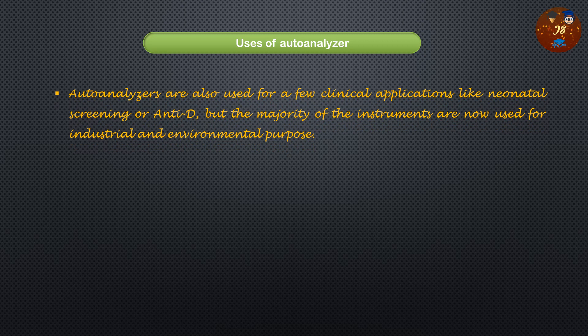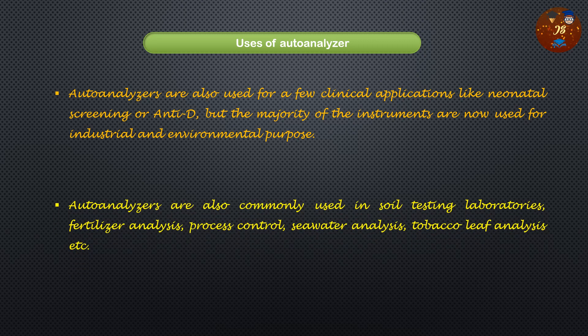Auto analyzers are also used for clinical applications like neonatal screening and blood typing (Rh positive or negative). The majority of instruments are now used for industrial and environmental purposes, and are commonly used in soil testing laboratories, fertilizer analysis, and process control. In summary, the prime use is medical laboratory analysis; the second most important use is industrial and environmental; and the third is agriculture.